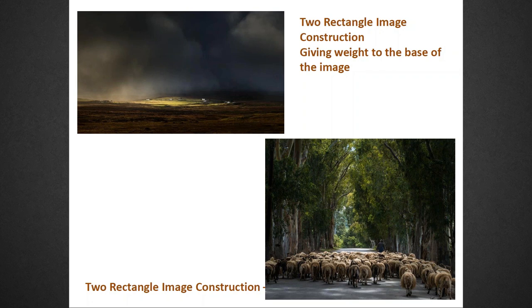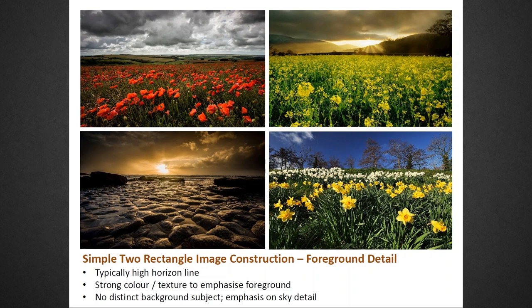It's worth re-emphasizing this slide — the horizon line is higher here. It's still two rectangles in terms of image construction, but the foreground has got detail in it. The foreground is the emphasis — whether it's color, the poppies, the oilseed, the rocks. So the emphasis is on the primary rectangle, which is the foreground, with the sky perhaps secondary.